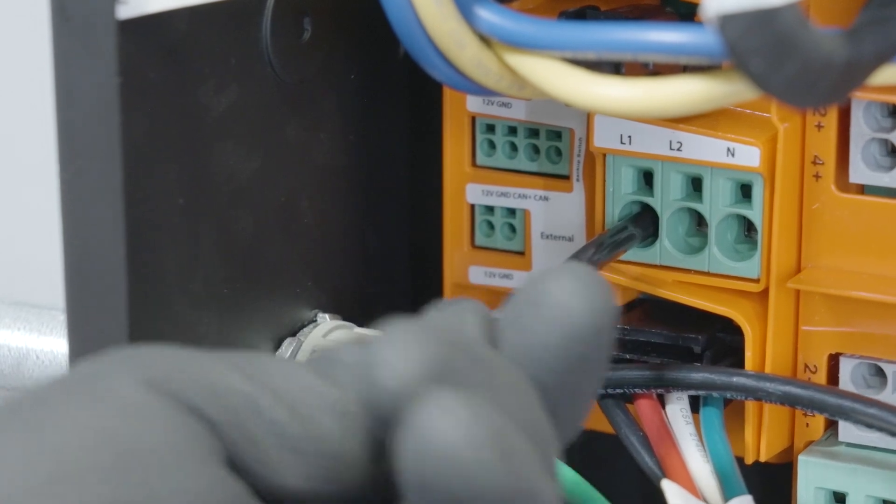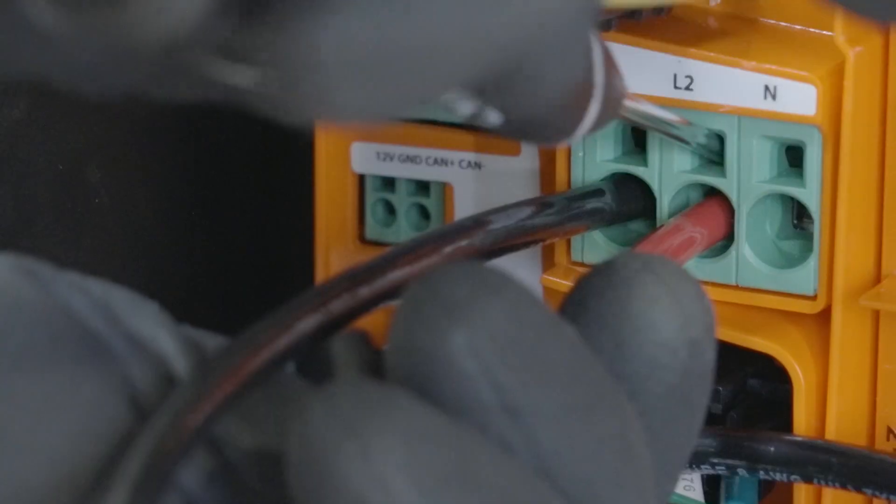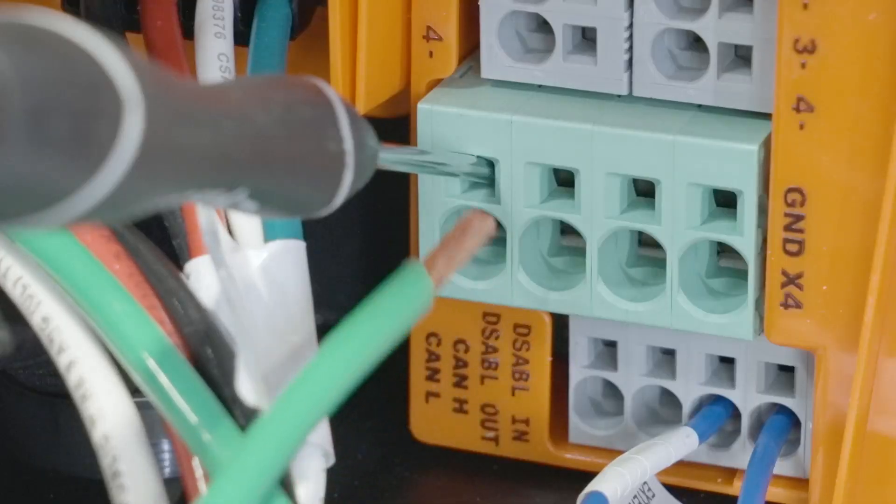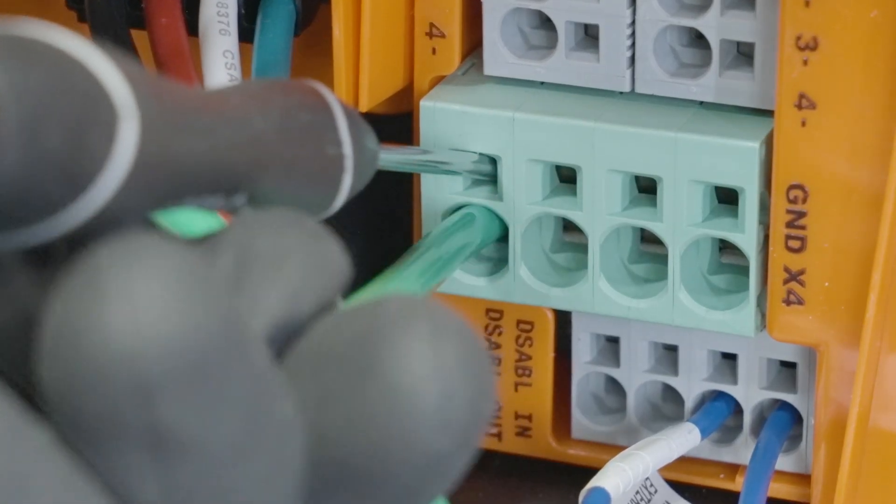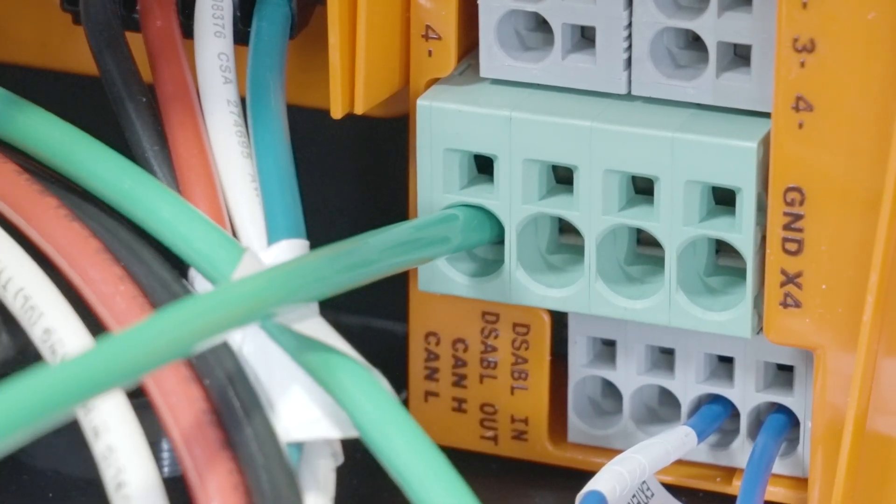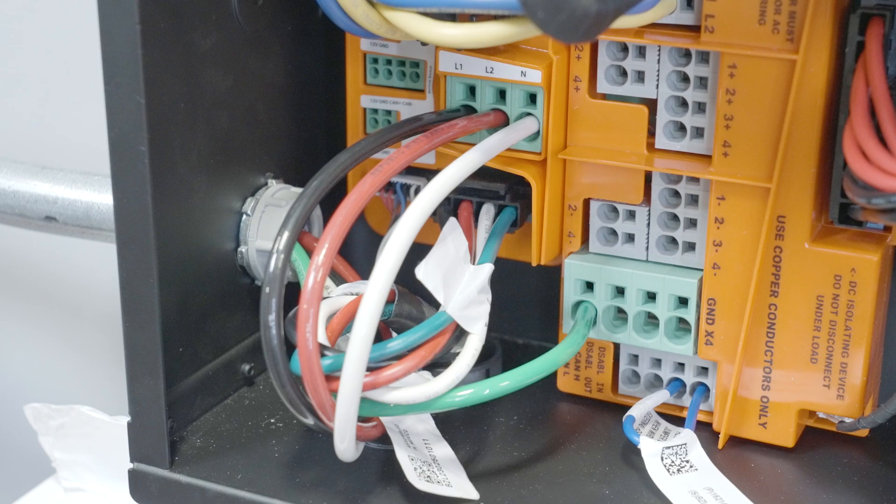Terminate the L1, L2, neutral, and ground conductors in their respective ports inside of the solar assembly. Perform a slight tug test to ensure that each conductor is properly terminated.